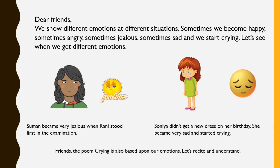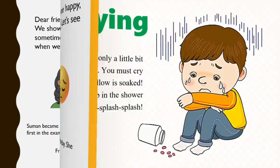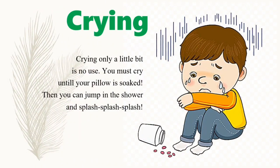The poem crying is also based upon our emotions. Let's recite and understand the poem. You can see in the picture this boy is crying a lot. Let me recite first — please listen carefully to how I am going to pronounce the words and recite this poem. After that I will make you understand what the poem actually wants to tell us.